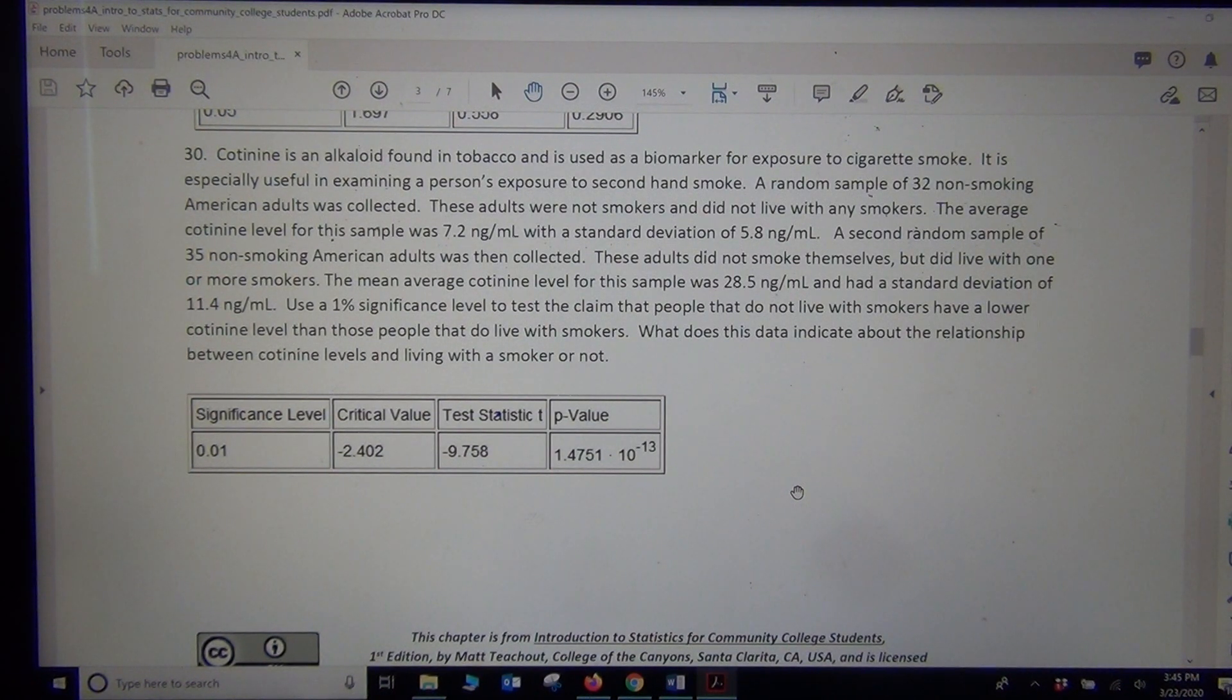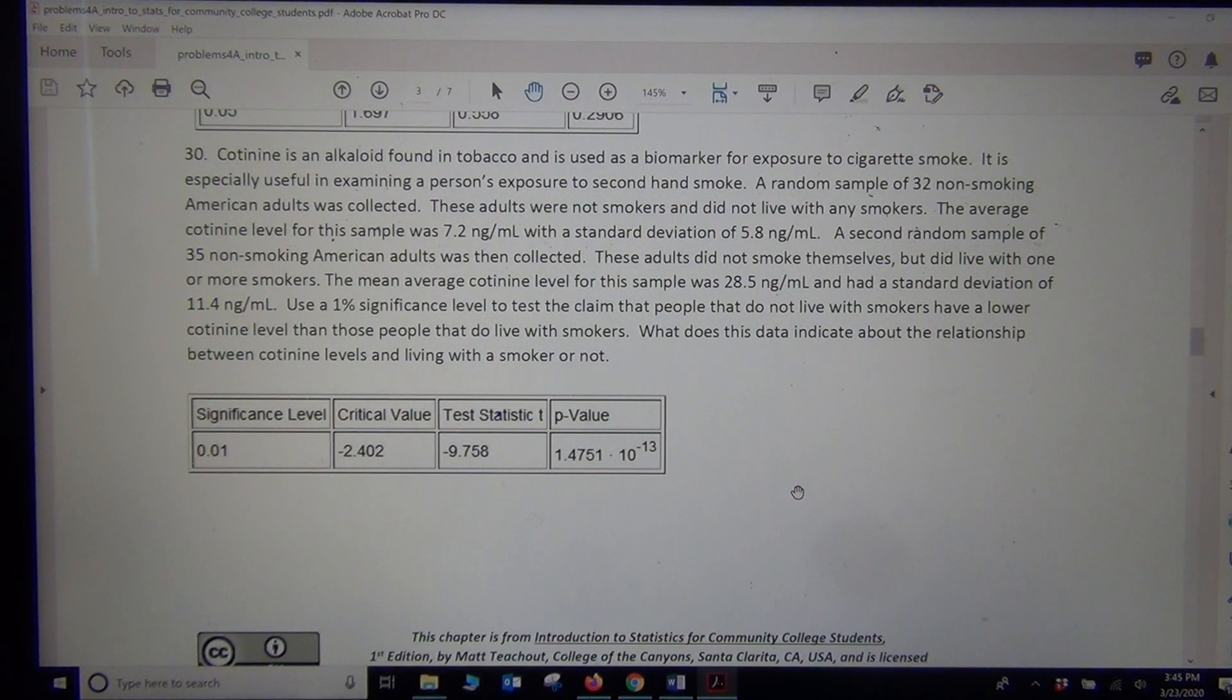The problem is about comparing cotinine levels, and basically it's secondhand smoke. So it says, cotinine is an alkaloid found in tobacco and is used as a biomarker for exposure to cigarette smoke. It is especially useful in examining a person's exposure to secondhand smoke. A random sample of 32 non-smoking American adults was collected. These adults were non-smokers and did not live with any smokers.